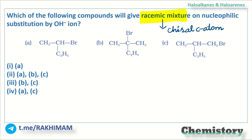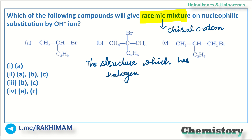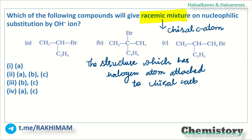The structure we want to identify is one which has a halogen atom attached to a chiral carbon, and that compound will form the racemic mixture.